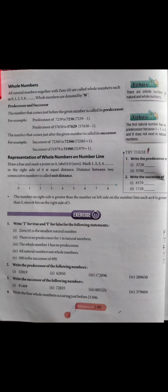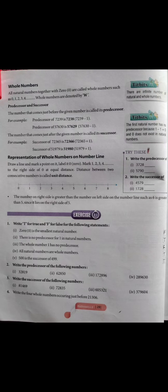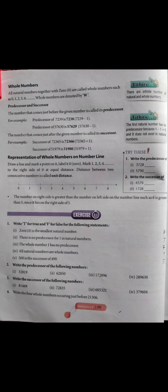Ab hamein next topic dekhna hai: representation of whole numbers on the number line. Whole numbers jo 0 se start hote hain aur infinity tak jaate hain, unko number line par represent karna hota hai. Sabse pehle hum ek number line draw karte hain jo 0 se start hoti hai: 0, 1, 2, 3, 4 — jahan tak numbers mark karne hote hain.